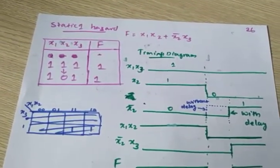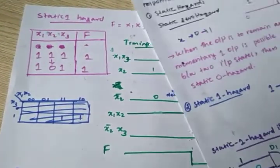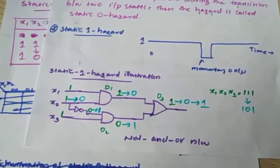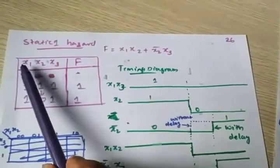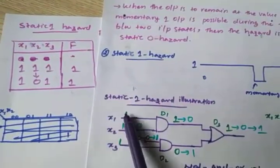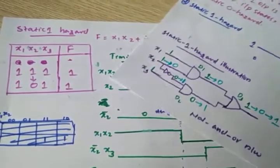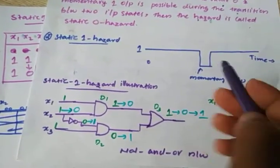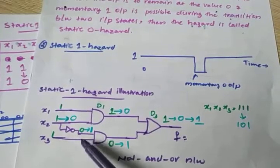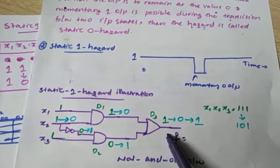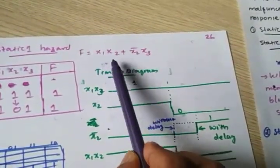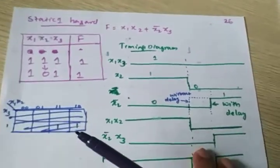Now again consider the static 1 hazard timing diagram. Here I am drawing the timing diagram for the circuit of this static 1 hazard. So 1, 1, 1 is changing to 1, 0, 1. So look here at X1, X2, X3 — this is output F. For 1, 1, 1 inputs, the output is 1. What is the output expression F? This is X1 into X2, and this is X2-bar into X3. So F equals X1·X2 plus X2-bar·X3. That is the output equation.